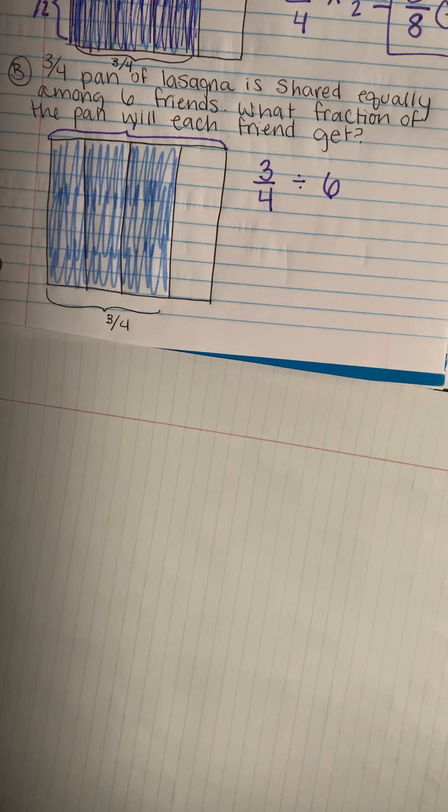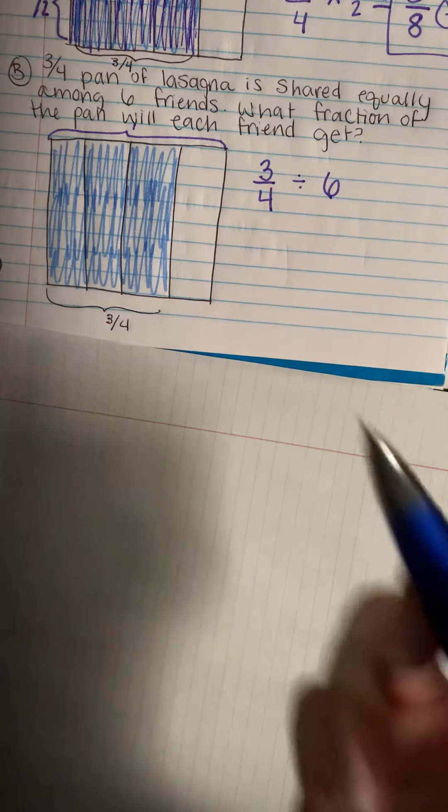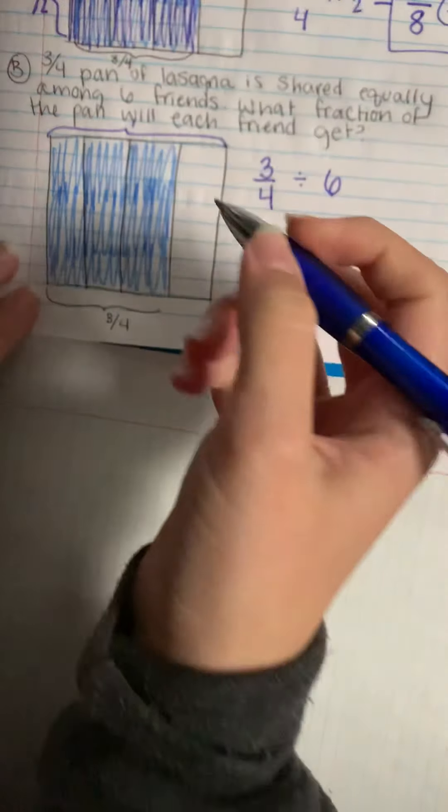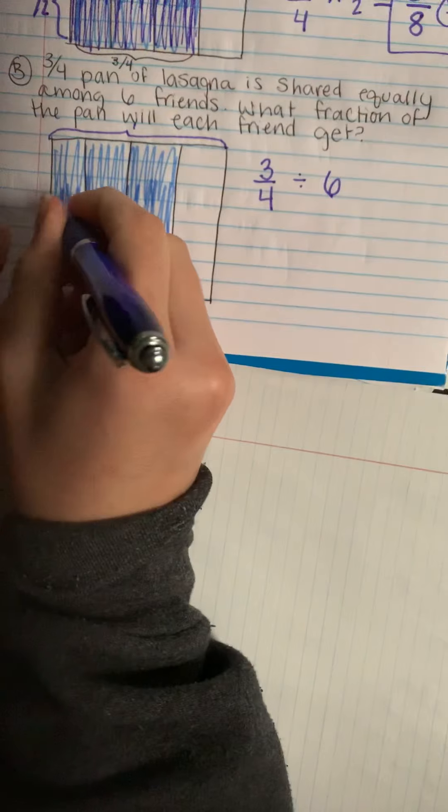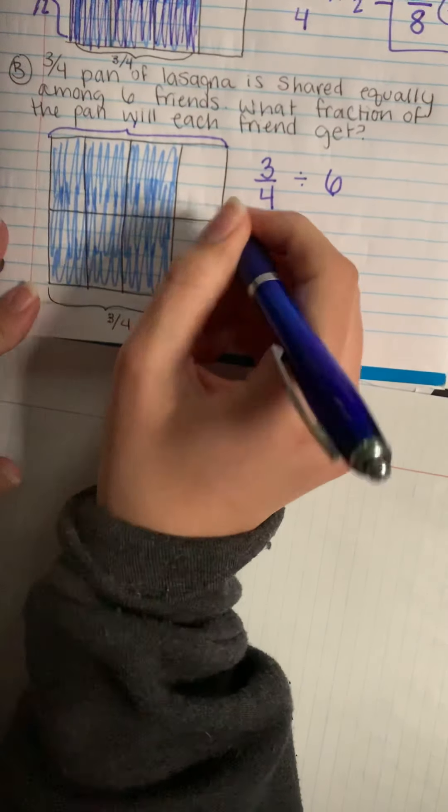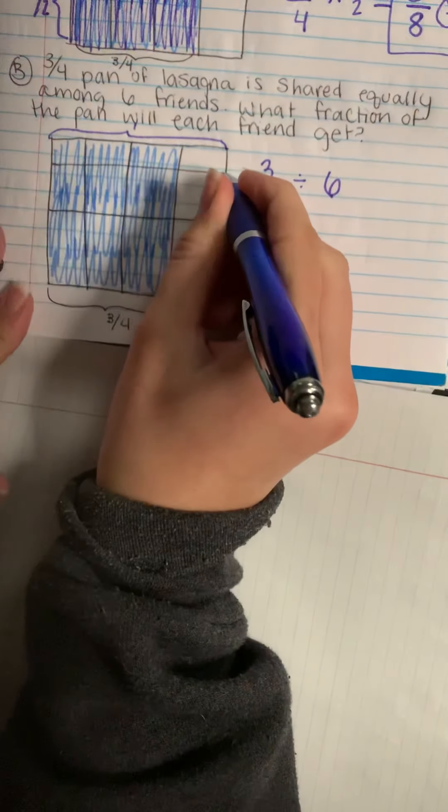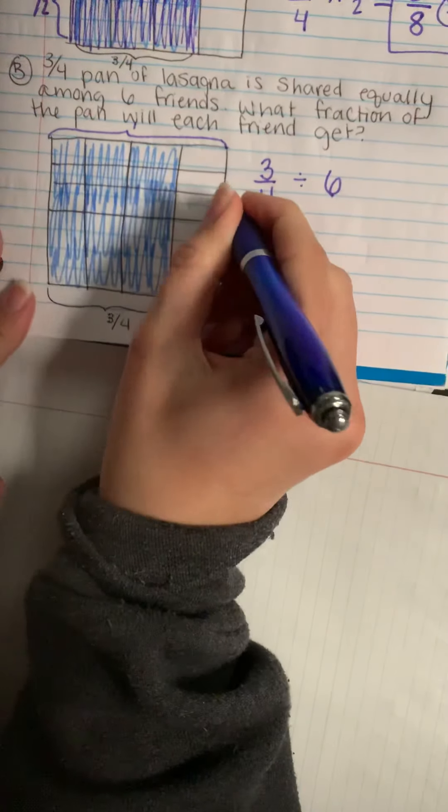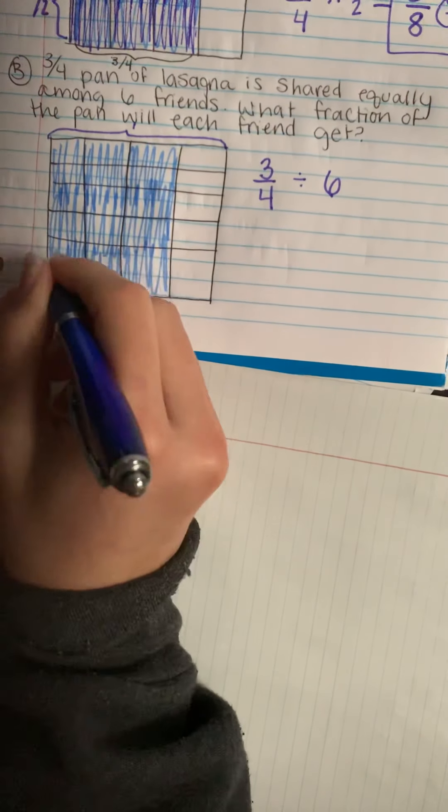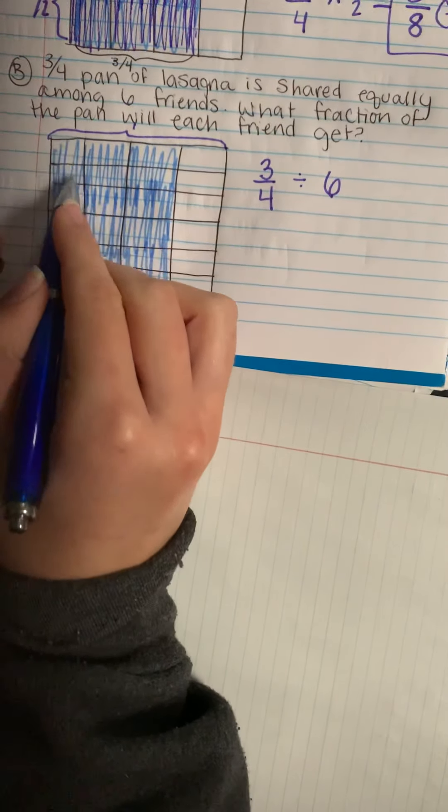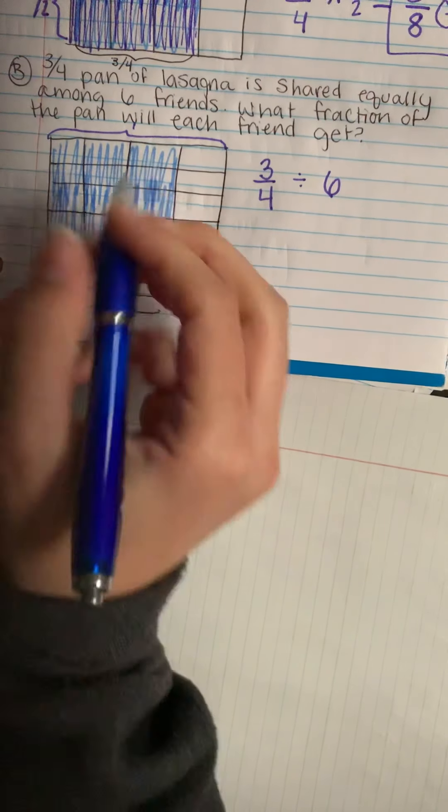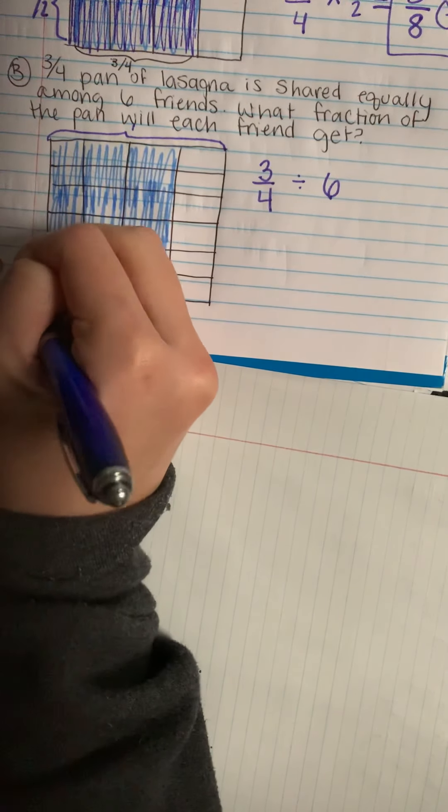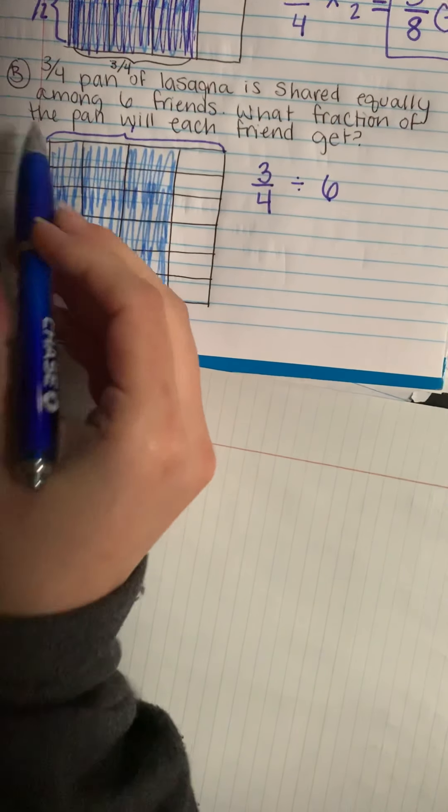Okay, so there's the amount of lasagna that's being divided up by our six friends. Now I have to partition the model again to show how the six friends are going to cut up their slices. So I'll use a horizontal line this time and cut it into six pieces horizontally. One, two, three, four, five, and six. So each one of these small pieces is one-sixth going this way.